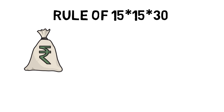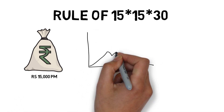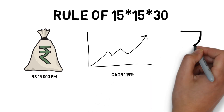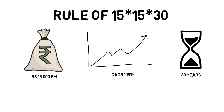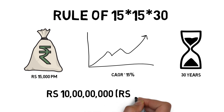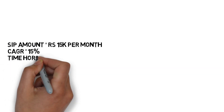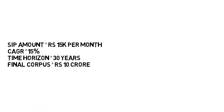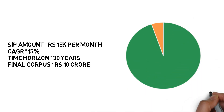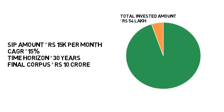The rule of 15x15x15 gets even better when you double the time horizon, keeping all other factors the same. Here you invest Rs 15,000 per month in an investment option which gives an annual return of 15% for a consistent period of 30 years. The final corpus built after 30 years will be Rs 10 crore — and yes, that's right, not a typo error. Your SIP amount is Rs 15,000 per month, CAGR is 15%, time horizon is 30 years, and the final corpus is Rs 10 crores. Your total investment amount is just Rs 54 lakhs, however as the power of compounding works in your favour, you will accumulate Rs 10 crore. Only by doubling the time horizon you can get 10 times the amount compared to the rule of 15x15x15, and that's why the power of compounding is considered the most substantial factor for wealth creation.